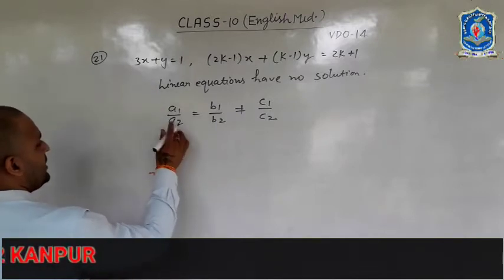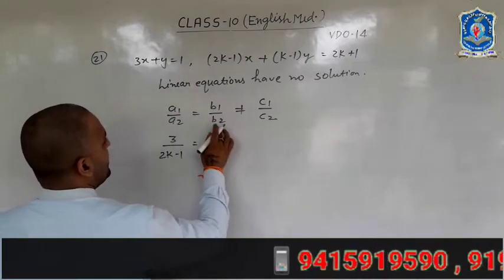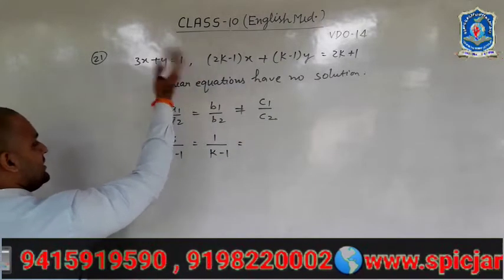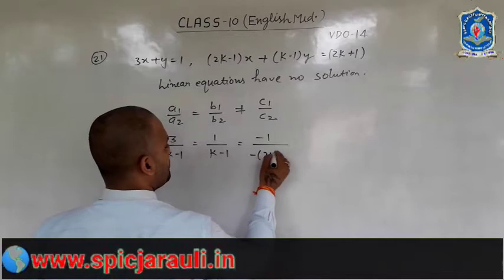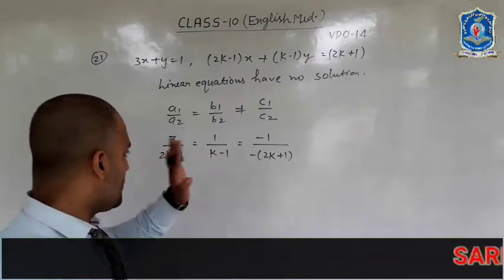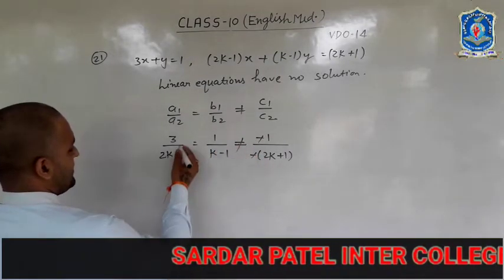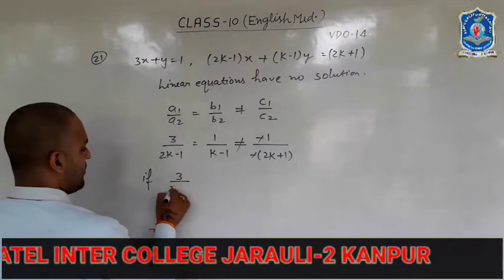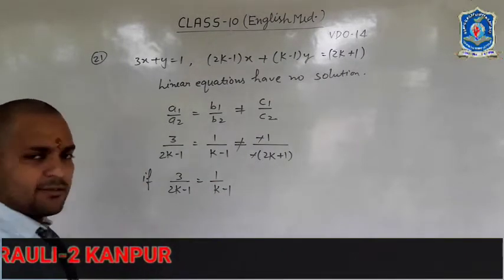Here, A1 equals 3, A2 equals 2K minus 1, B1 equals 1, B2 equals K minus 1, C1 equals minus 1, and C2 equals minus (2K plus 1). After cancelling the negatives, taking A1/A2 and B1/B2: 3 upon (2K minus 1) equals 1 upon (K minus 1). Cross multiply and find the value of K. Then check that 1 upon (K minus 1) does not equal 1 upon (2K plus 1); cross multiply and solve for K.